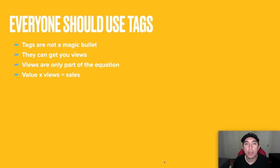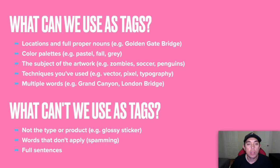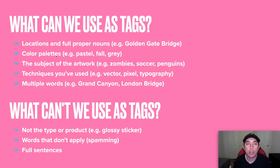So you may be thinking, what can I use as tags? This comes straight from Redbubble. You can use locations and full proper nouns — like Golden Gate Bridge or San Francisco, those are locations and nouns. Color palettes — whatever color is in your design: pastel, fall, gray, whatever describes it as a color. Red, blue, those kinds of things.